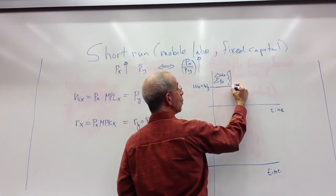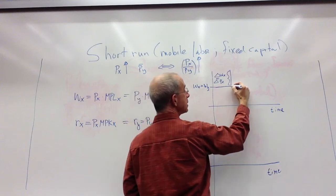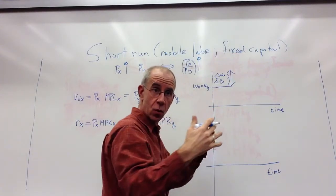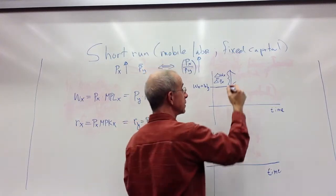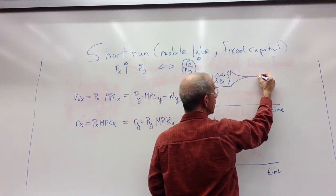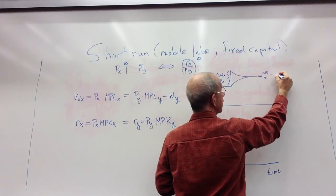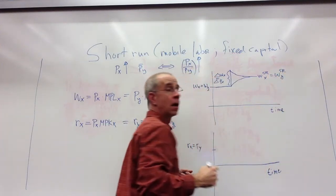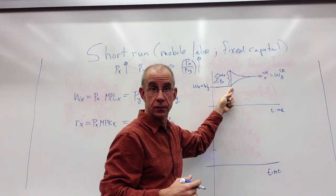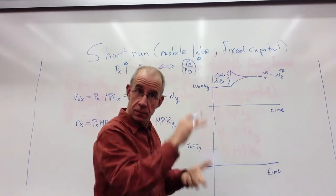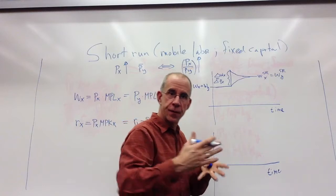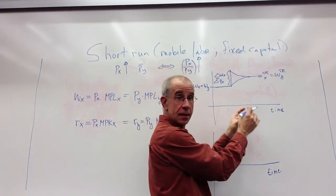The wage in Y, which initially hadn't changed, tends to start to move up. The wage in X starts to move down as the workers move from sector to sector. That is going to continue until the wage in the short-run in X is equal to the wage in the short-run in Y. The wage generally rises relative to what it started, but it rises by less than the price rise in X because of the movement of the labor.